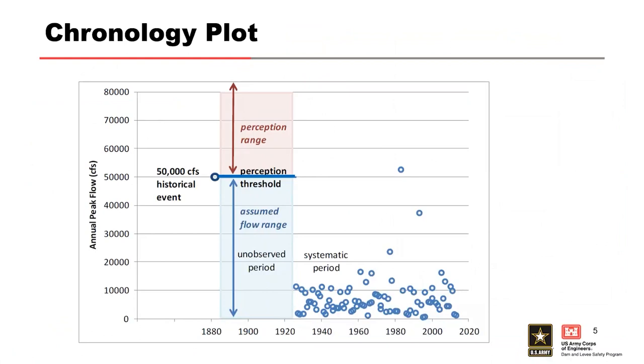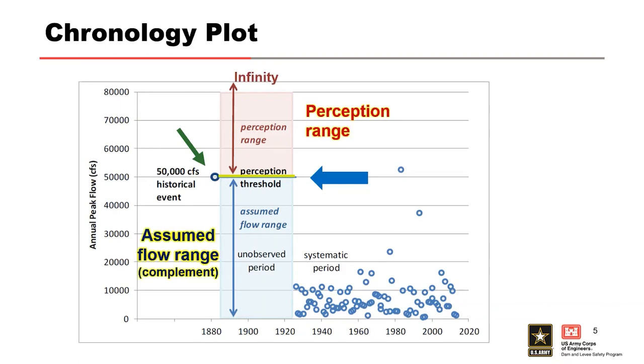Shown here is another example of a chronology plot to illustrate the threshold concept. In this example, the indirect perception threshold is based on knowledge that the historical event is larger than the known flood that occurred during the historical period. This means that all the other unobserved annual maximum flows during the historical period must have been less than that largest observed historical event. A perception threshold defines the region where floods can be observed and are recorded if they occurred. The complement of the perception threshold range is the flow range that defines the range of flow values that occurred but were not directly observed.